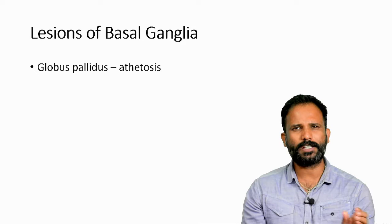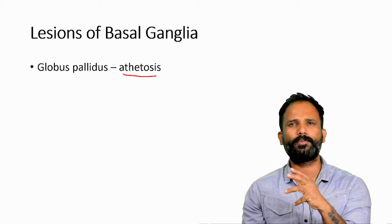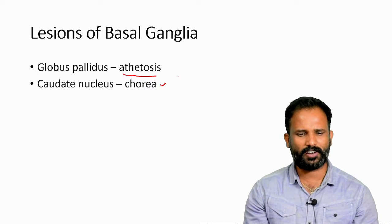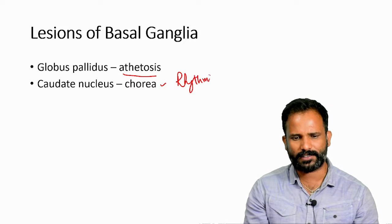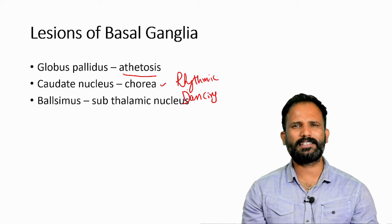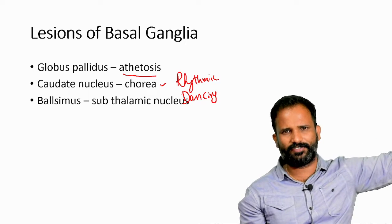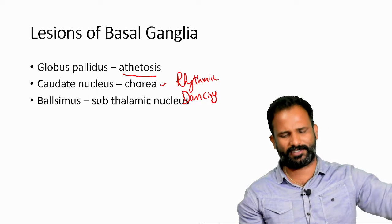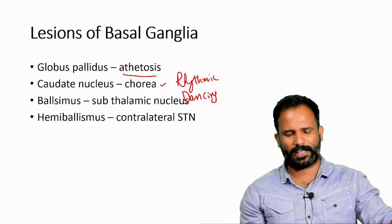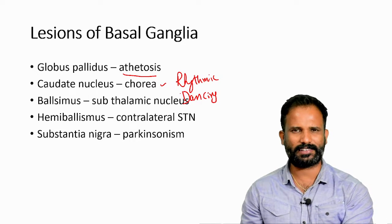Regarding lesions of basal ganglia: globus pallidus lesion causes athetosis, which is a slow writhing movement. Caudate nucleus lesion causes chorea, which presents as rhythmic dancing-like movements. Ballismus involves involuntary projectile-like movements with a very wide range. Hemiballismus usually involves half the body and is due to a lesion in the contralateral subthalamic nucleus. Substantia nigra lesion causes Parkinsonism.